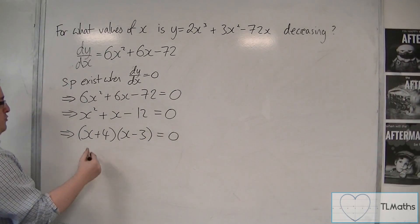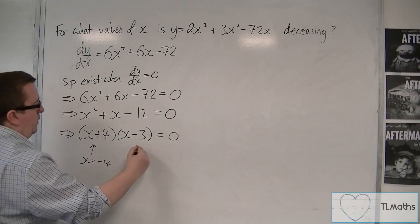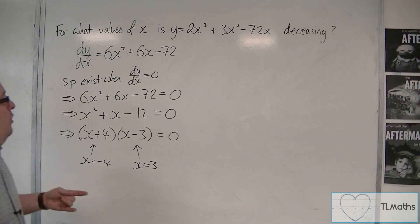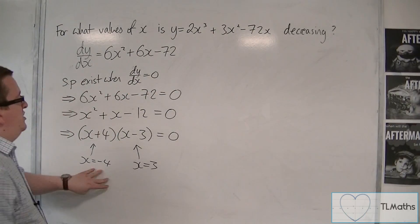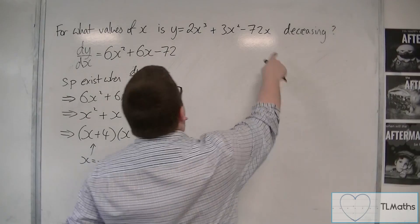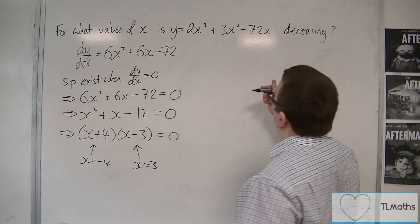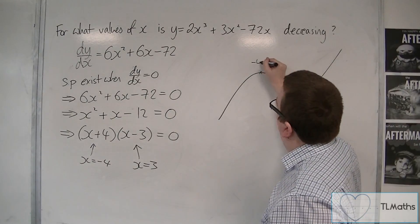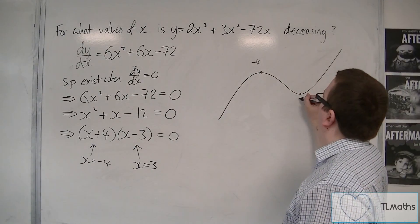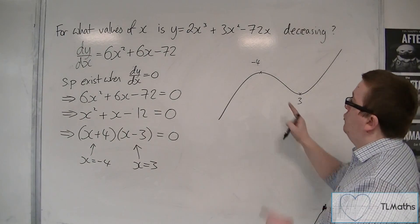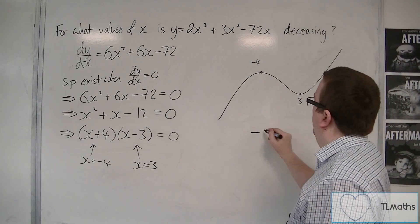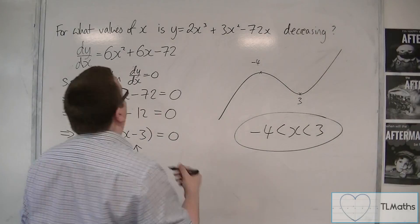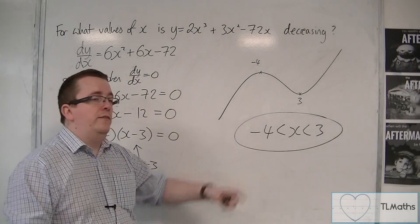So the stationary points exist when x is minus 4 or when x is 3. Knowing the shape of a cubic curve with two turning points, and that the coefficient of x cubed is positive, the curve must look like that — with a local maximum at minus 4 and a local minimum at 3. So the curve is decreasing between minus 4 and 3, and that inequality describes the values of x for which the curve is decreasing.